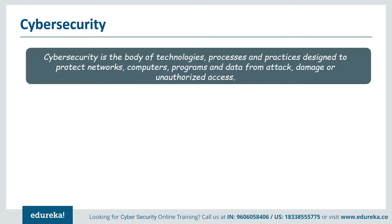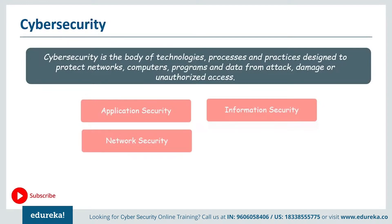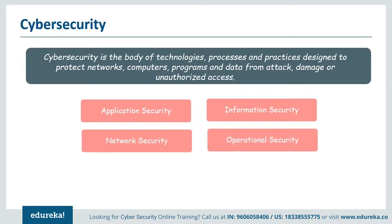Ensuring cyber security requires coordination throughout an information system. This includes application security, which focuses on keeping software and devices free from cyber threats; information security, which protects the integrity and privacy of data to prevent data breaches; network security, which secures a computer network from intruders whether targeted attackers or malware; and operational security, which covers all processes for handling and protecting data assets, including user permissions and procedures for how and where data must be stored and shared.